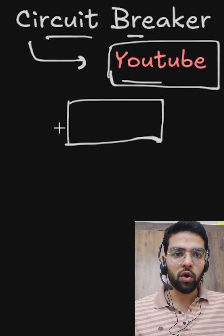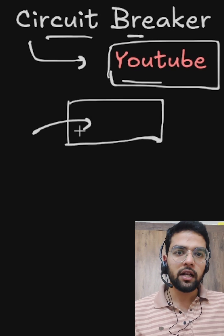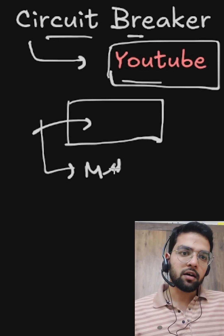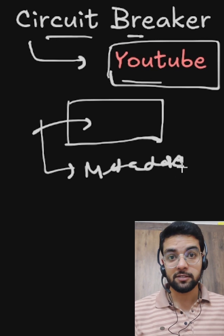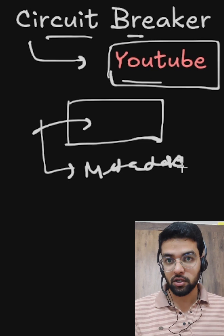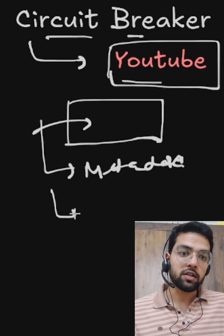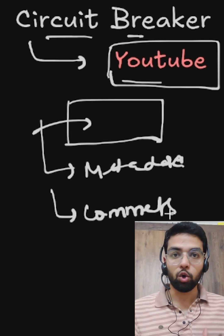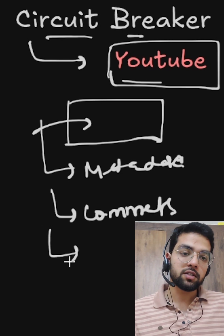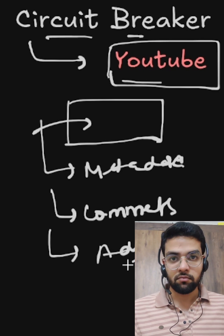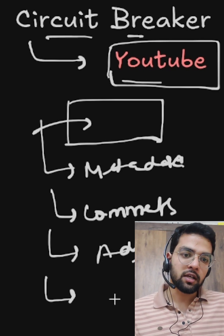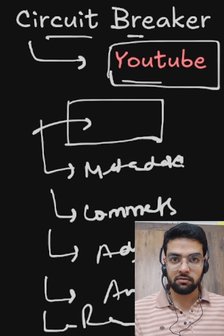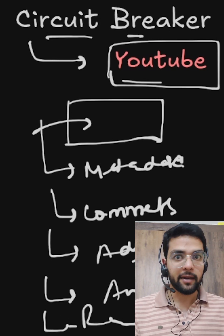suppose this is the video you have clicked on. Now once you clicked on a video, YouTube called Metadata Service which is responsible to load the title, description, duration. YouTube calls comments service, responsible to load the comments. YouTube calls ads, which ad to show up. YouTube calls analytics service. YouTube calls recommendation service, recommended videos up next.